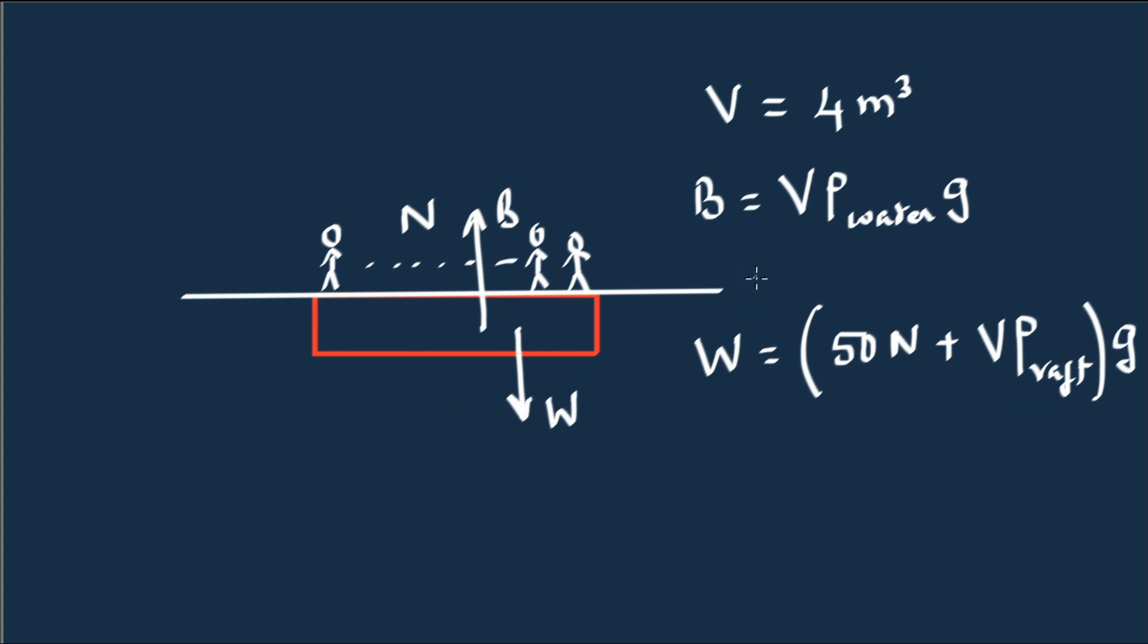Since everything is in equilibrium, buoyancy is equal to weight, so g cancels. And let's substitute numbers: the volume is 4, the density of water is 10³ kilograms per cubic meter, and that is equal to 50 times n plus volume of the raft, which is 4.